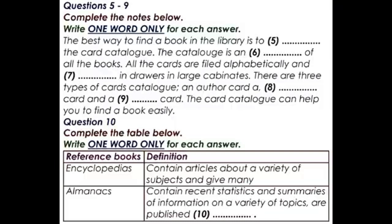Let us see some major types of reference books. First, dictionaries. Dictionaries are books that list and give the meanings of the words in a language. They also give the pronunciation of words, which are listed alphabetically in a dictionary.